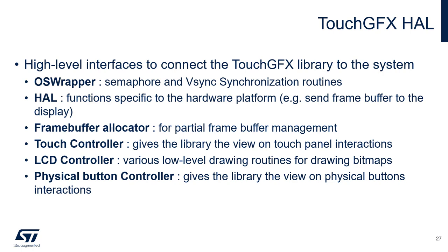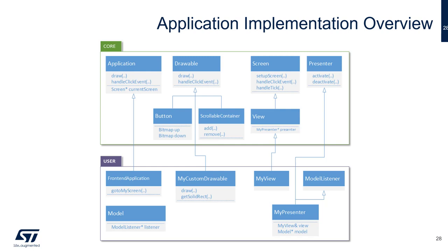An overview of an application implementation: the core part is automatically generated and consists of the set of interfaces mentioned. You can see the presenter and the screen — each view inherits from a screen. Here you can also see the drawable from which the button inherits, and from which your custom drawable will also inherit. The model is defined on the user side and can be updated directly by the user; the base classes will not be modified by the user.